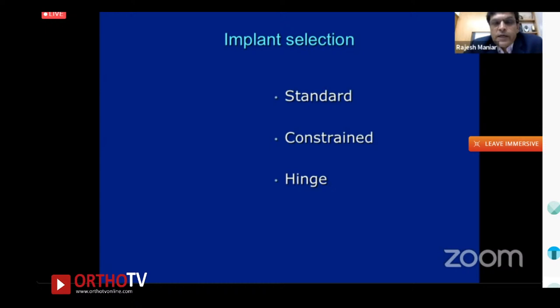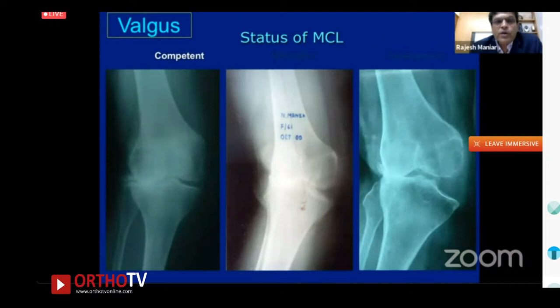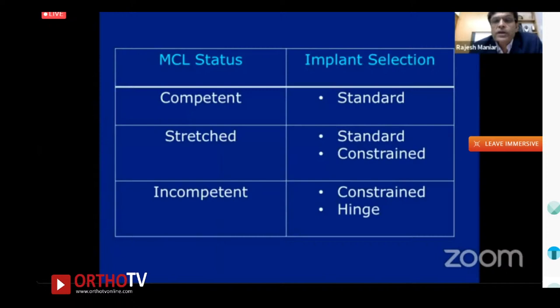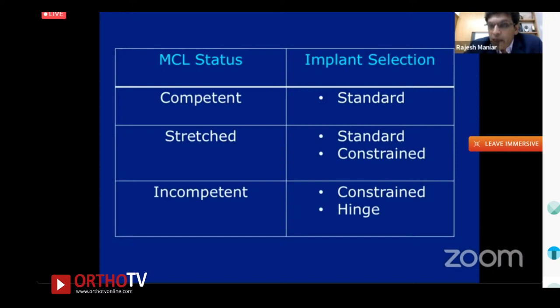Implant selection becomes critical as the case becomes more complex — keep all armamentarium ready: standard, constrained, and hinge. There are three types of MCL situations in valgus: normal functioning MCL, stretched MCL, and incompetent MCL. For a competent MCL, standard implants suffice. For a stretched MCL, most of the time a standard implant works with constraint kept nearby. For an incompetent MCL, at minimum a constrained implant is needed, rarely a hinge.